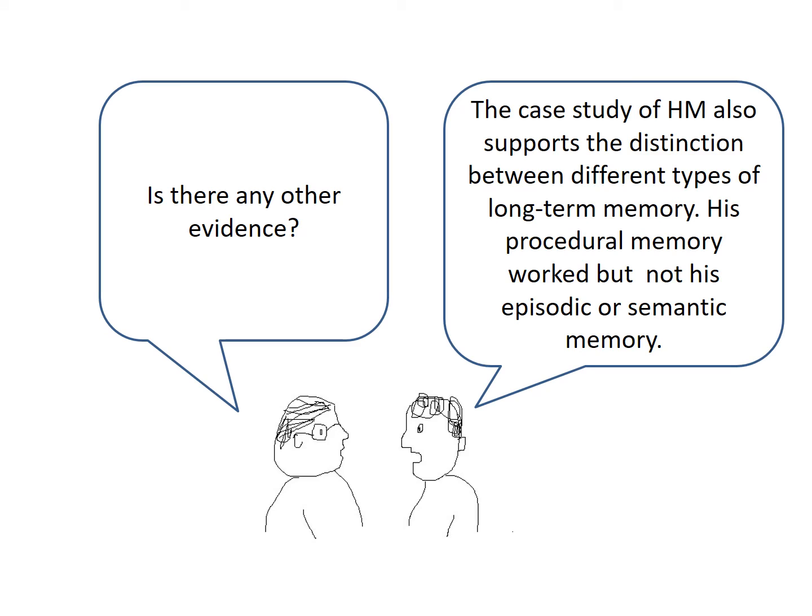Other evidence for the distinction between different types of long-term memory comes from the case study of HM. His episodic and semantic memory did not work, but his procedural memory did, and he was able to learn new motor skills. For example, he was able to learn to draw a figure by looking at its reflection in a mirror, a skill called mirror drawing.